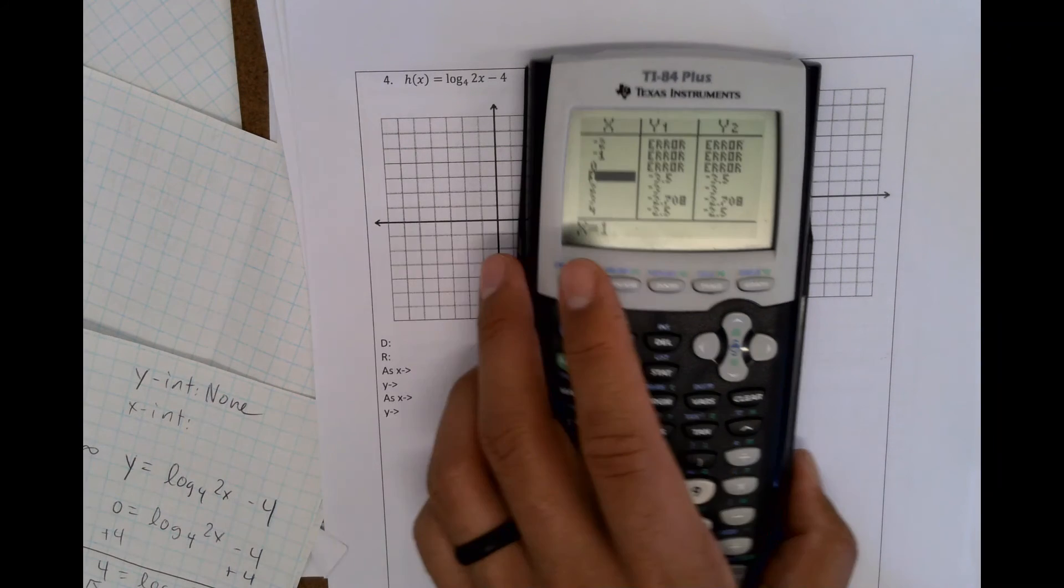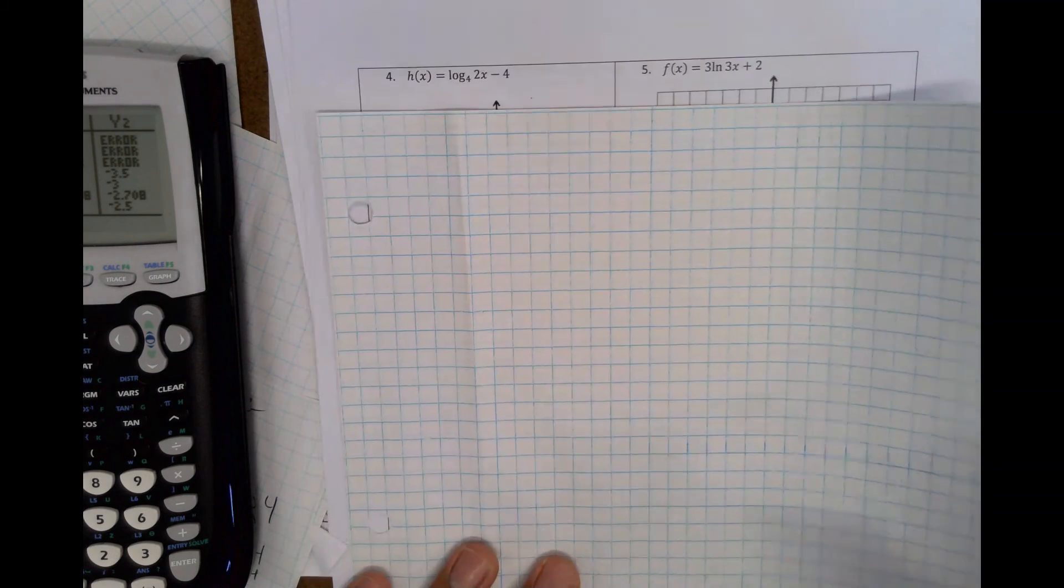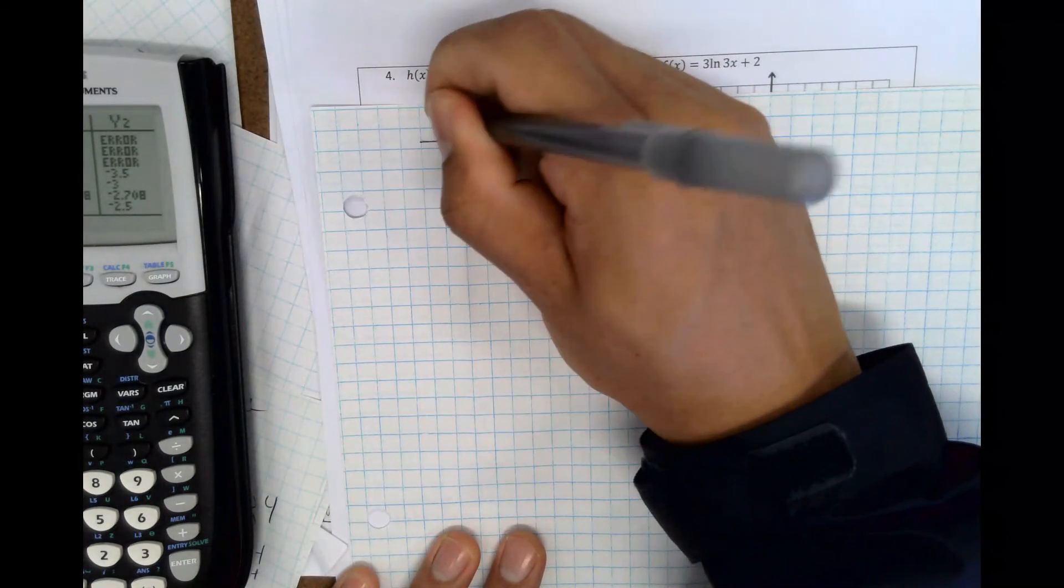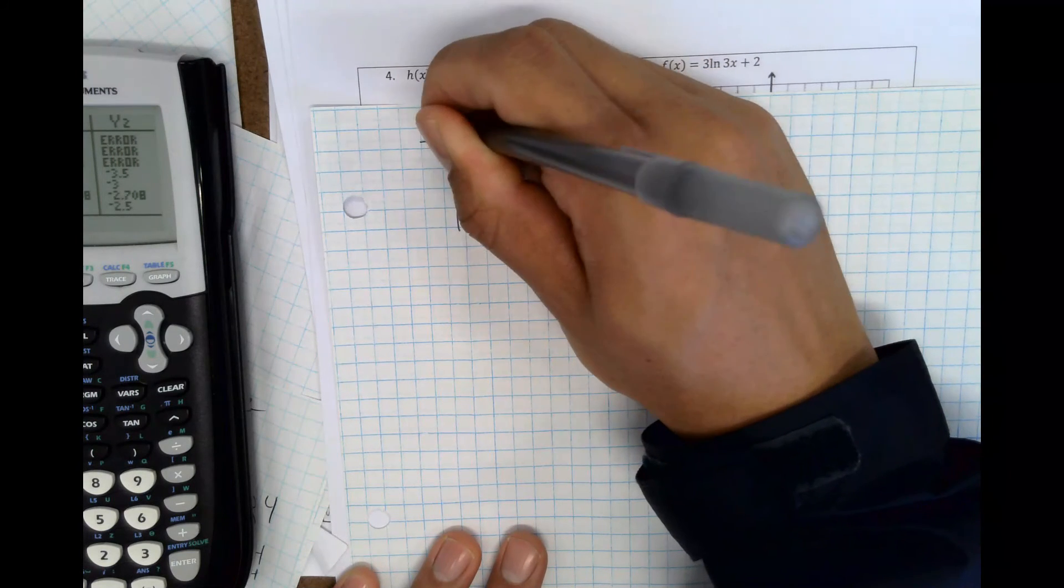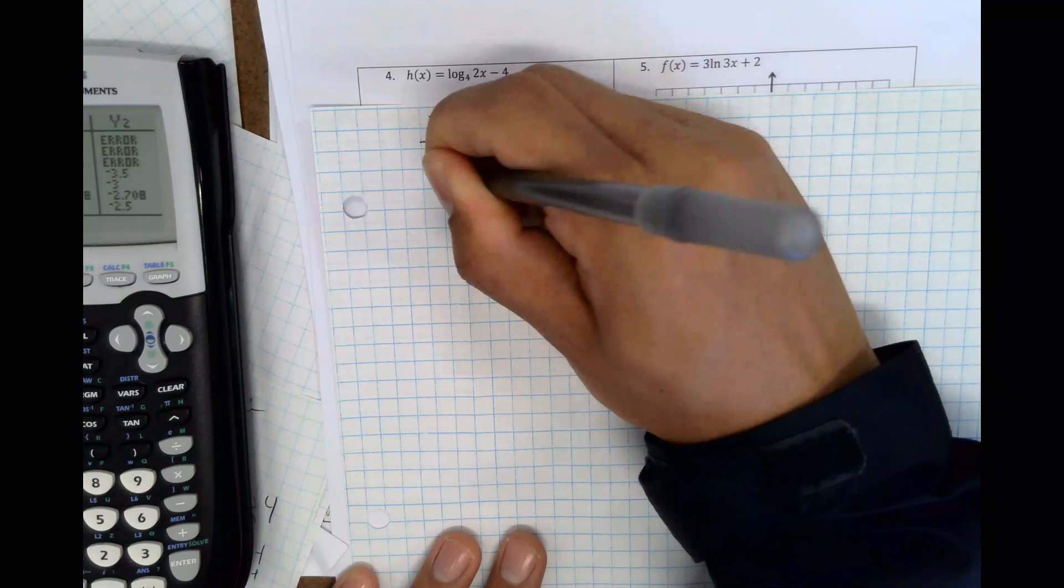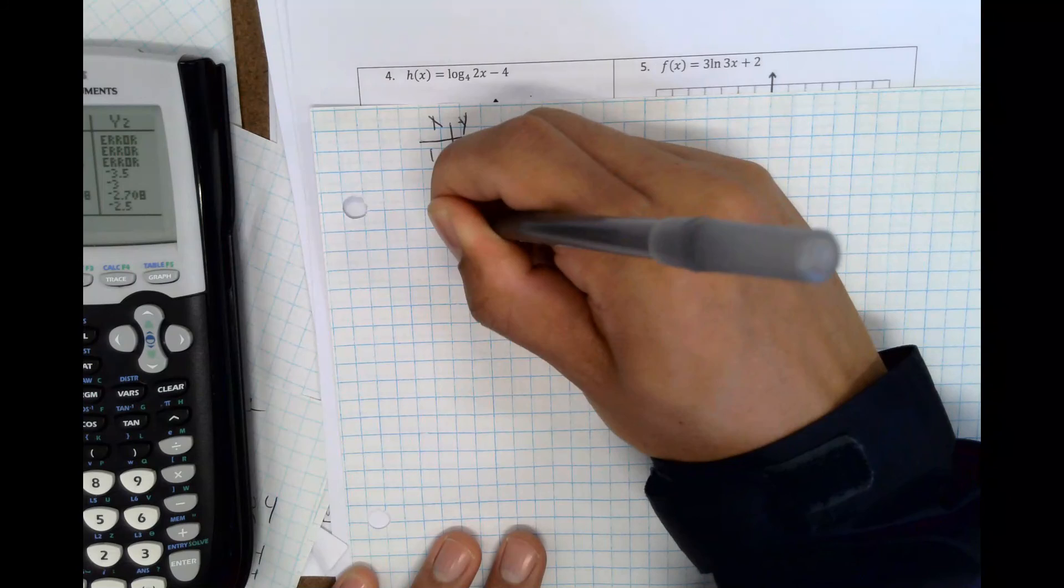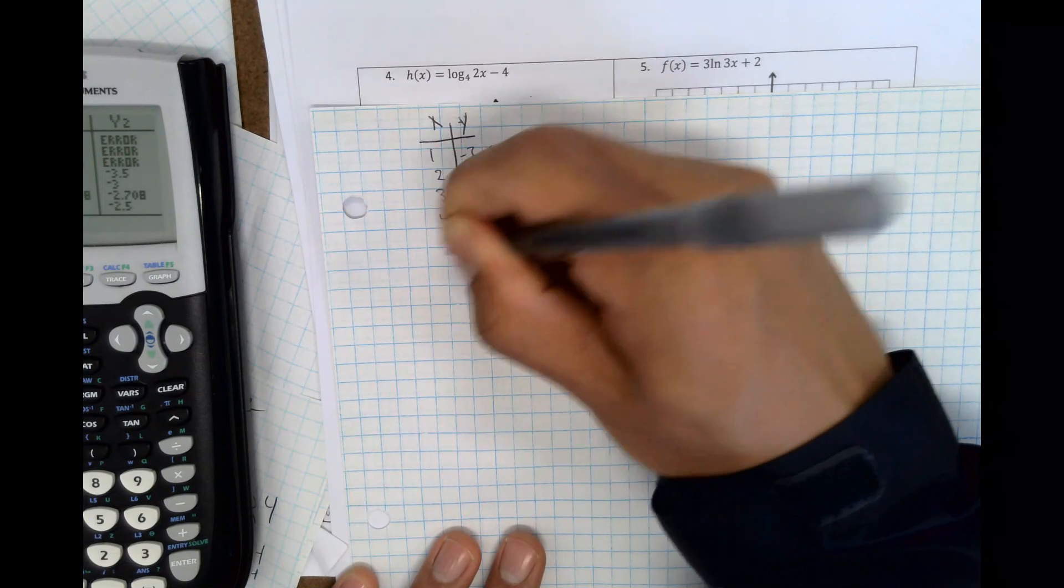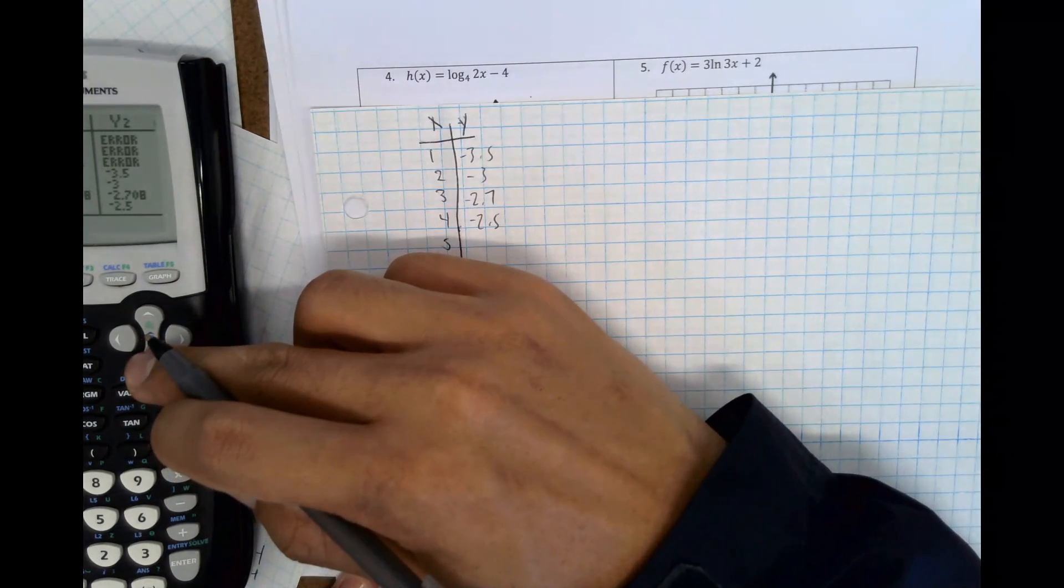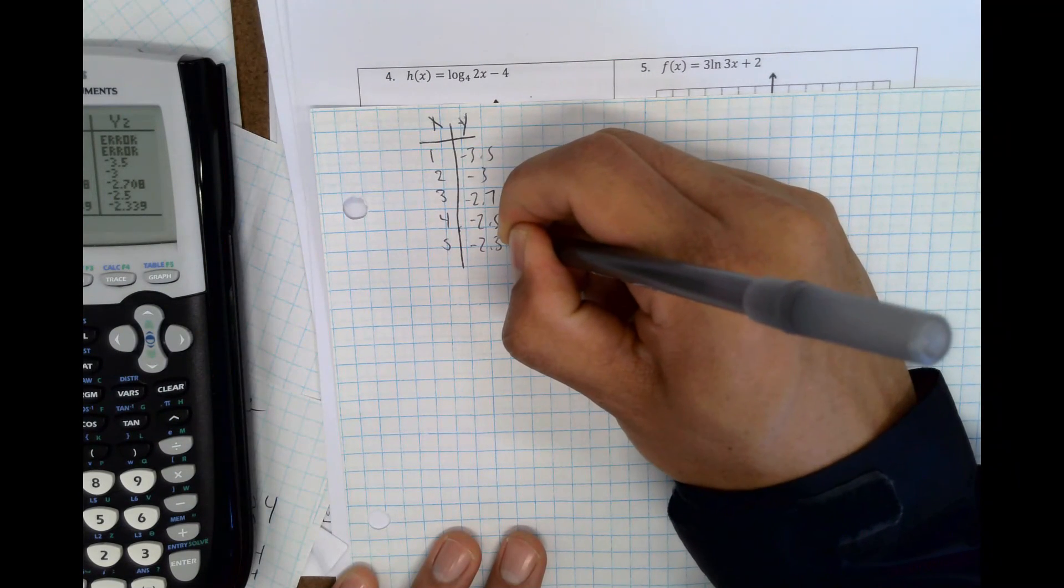So what you do is, for this one, I would just go ahead and start writing down the values. So it would be like 1, negative, sorry, this should be x and y. Okay.